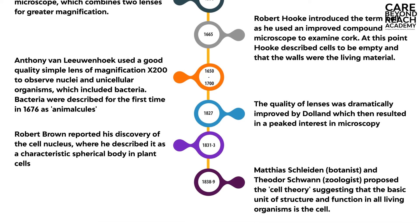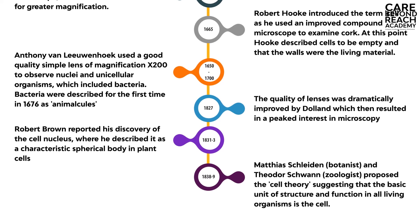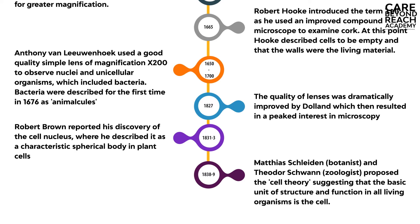In 1838 to 1839, Matthias Schleiden, who is a botanist, and Theodore Schwann, who is a zoologist, proposed the cell theory, suggesting that the basic unit of structure and function in all living organisms is the cell.